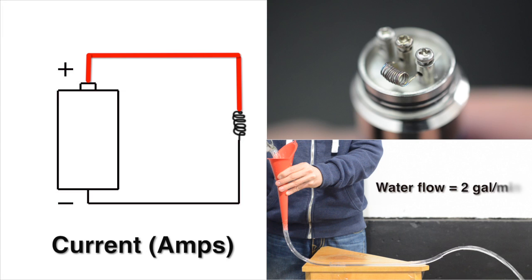Water flow, for example, could be measured in gallons per minute, but electrical current is measured in amps. So when you say I equals 2 amps, you're saying the current is flowing at a rate of 2 amps.